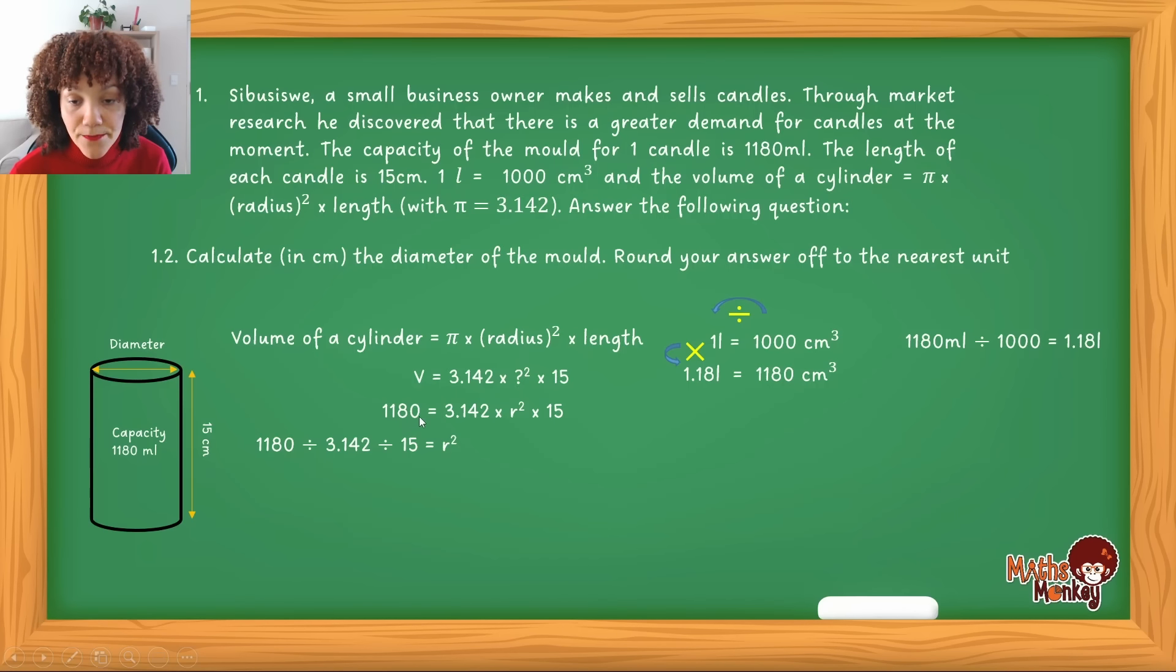So on the left we've got the 1180 and I want to find r squared alone, which means I'm going to move the 3.142 and the 15 over the equal to sign. But because on the right hand side this is multiplication, when I take it over to the left I'm going to divide.